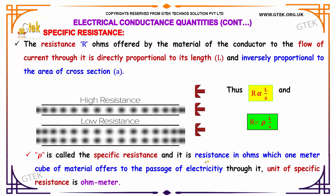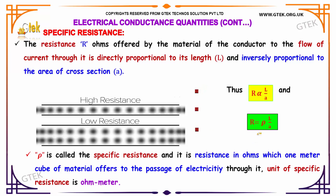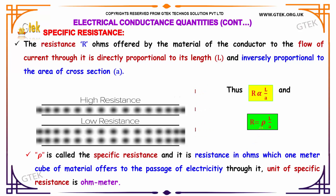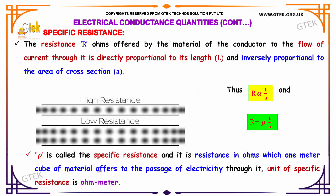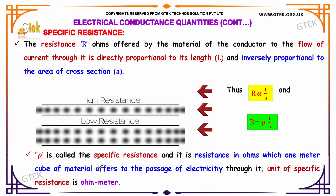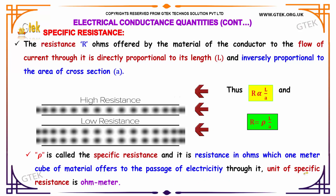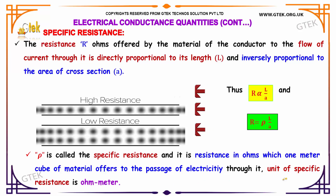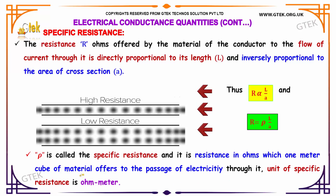Specific resistance is the resistance in ohms that one meter cube of a material offers to the passage of electricity through it. The unit of specific resistance is ohm-meter.